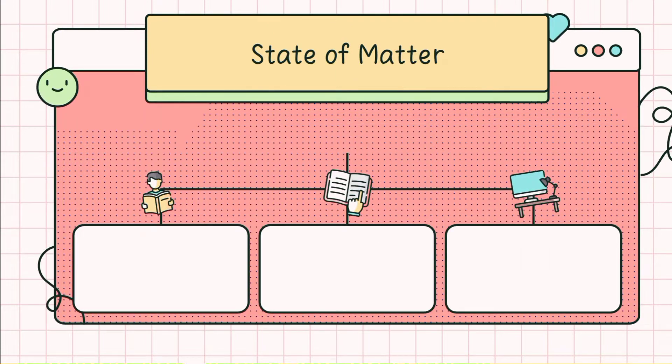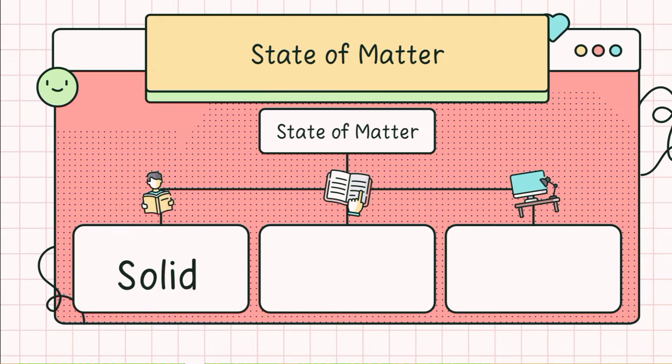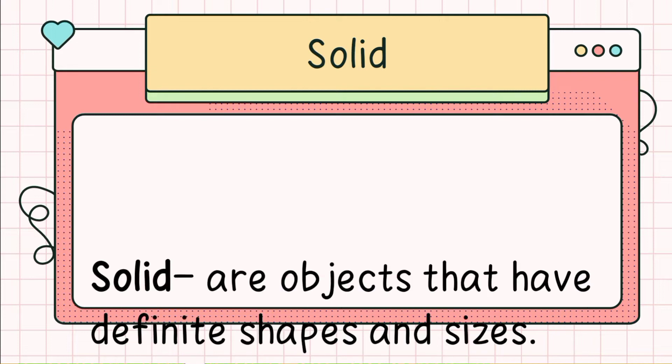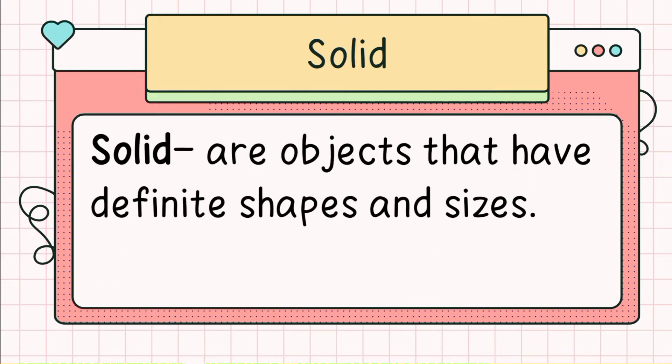The state of matter: we have solid, liquid, and gas. Let's talk about solid. Solids are objects that have definite shapes and sizes.